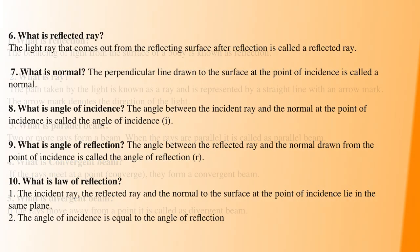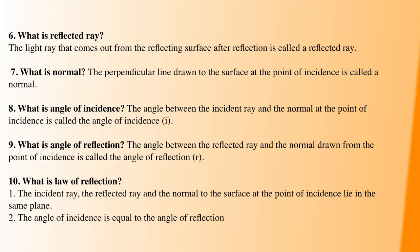Next question: what is a reflected ray? A reflected ray is the light ray that bounces off a reflecting surface. Next question: what is normal? The normal is a perpendicular line drawn to the reflecting surface at the point of incidence.